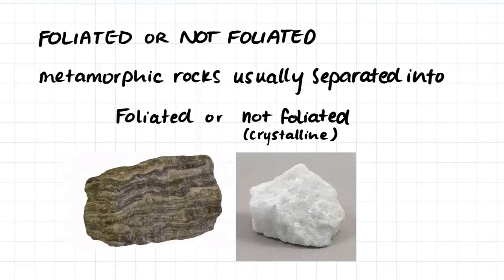Metamorphic rocks are either foliated or not foliated. Foliation refers to the stripes that can occur through metamorphic rocks. We often separate metamorphic rocks into two separate categories according to whether they are foliated or not foliated.